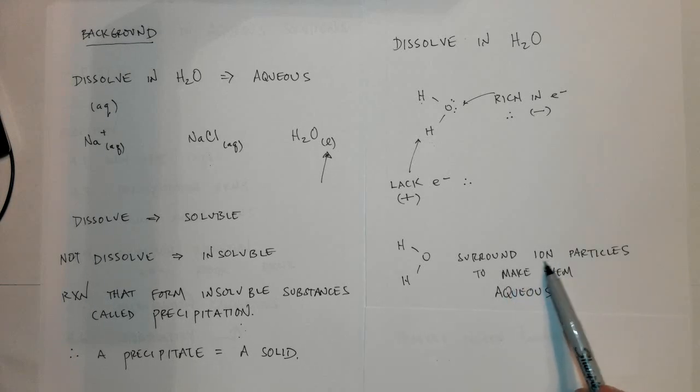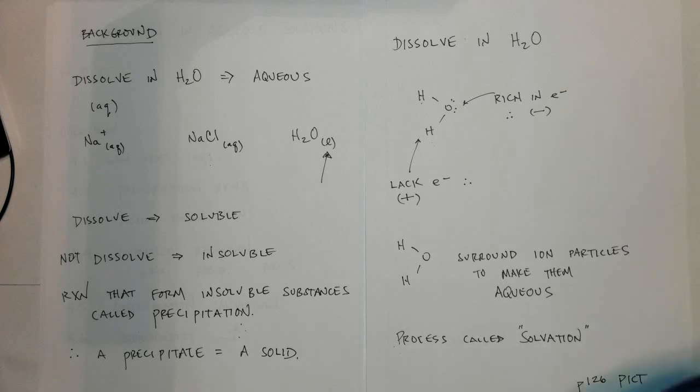Remember, ions are things that have gained or lost electrons and therefore have a positive or negative charge. This allows water to surround ion particles to make them aqueous or to make them dissolved. This process is called solvation. Solvation, or a solvated compound.